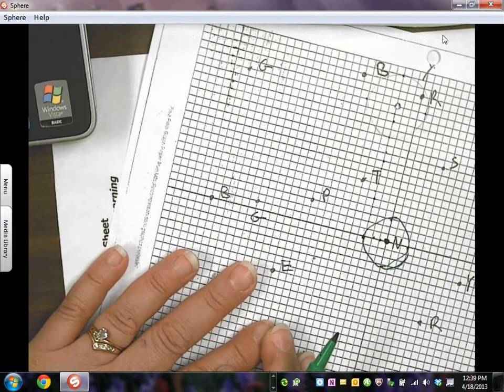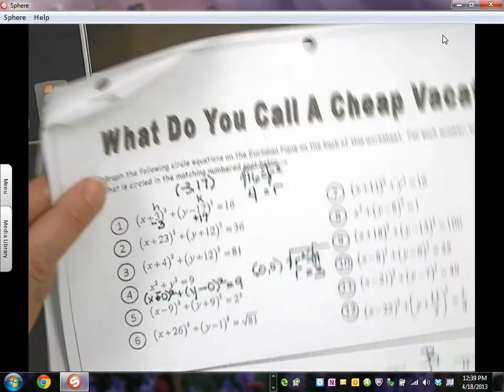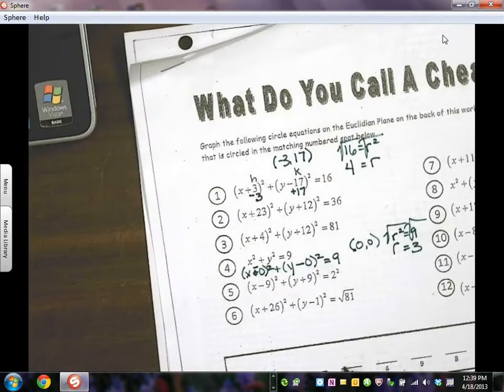What letter is inside that circle? The letter N. So you would come down and go to number 2 and put an N.